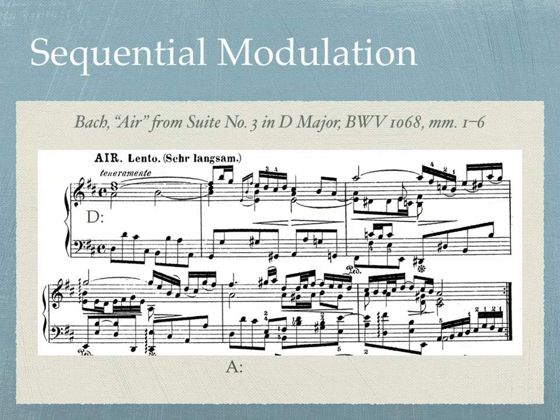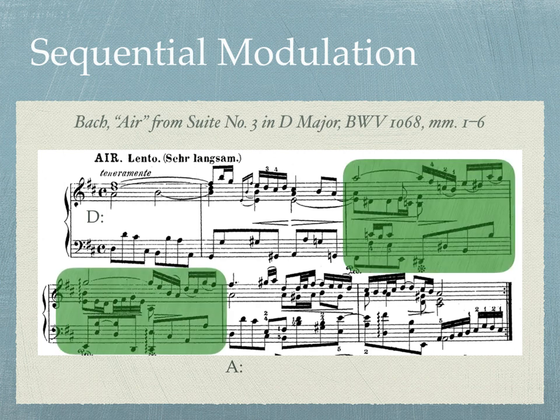Sometimes composers can smooth over an abrupt modulation by using a sequence. A sequence, remember, is a repeated pattern at a higher or lower pitch level. A sequential modulation, then, is a passage repeated, literally transposed into the new key. In this example, Bach uses a sequence in the third and fourth measures to enact a modulation from D major to A major without the listener even knowing that the key has changed. Listen to the example and verify the repetition of the passage in the sequence.